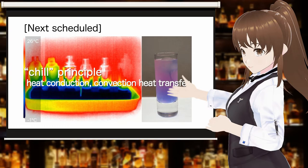The next video will cover the chill principle — heat conduction and convective heat transfer. The explanation will include experiments using thermo-ink, which changes color with temperature, and thermography, which produces images of heat distribution. If you are interested, please subscribe to the channel and watch.